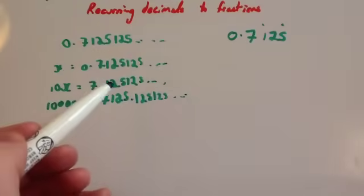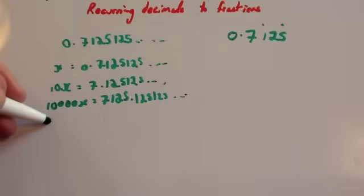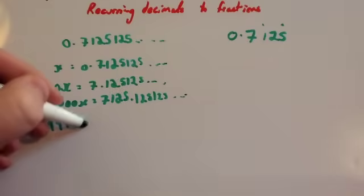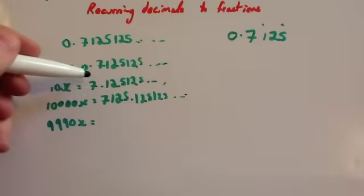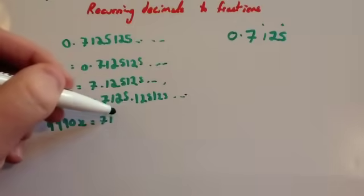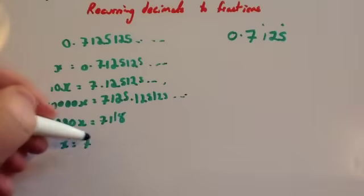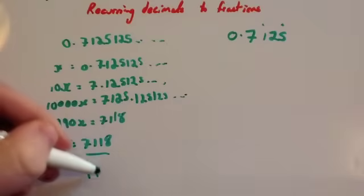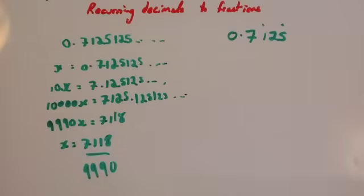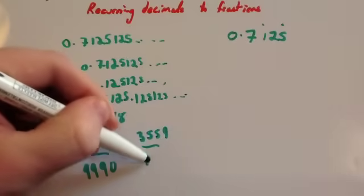Subtracting 10x from 10,000x: the recurring parts after the decimal point cancel out, leaving 9,990x. Then 7125 minus 7 = 7118, so 9,990x = 7118. Divide to get x = 7118/9990. Cancel it down by halving both: you get 3,559 over 4,995.